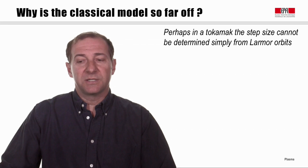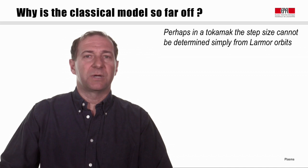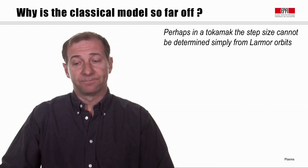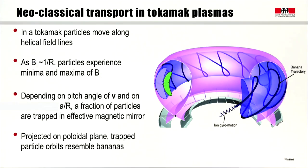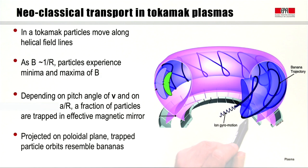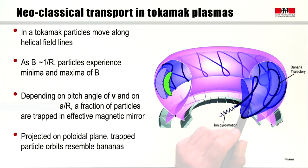So the first question is: why is the classical model so far off, both quantitatively in evaluating D_perp and also in terms of its scaling with plasma parameters? What have we done wrong? The first issue is that perhaps the step size, at least in the tokamak plasma, is not quite the Larmor radius — it would be more complicated, because the orbits are more complicated. As we learned in previous lectures, in the tokamak particles move along helical field lines, and in addition to their gyromotion, they have an orbit that goes around those helical field lines.